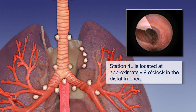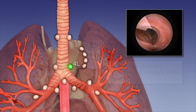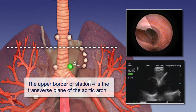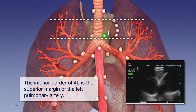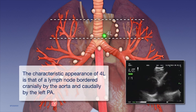Station 4L is located at approximately 9 o'clock in the distal trachea. The upper border of Station 4 is the transverse plane of the aortic arch. The inferior border of 4L is the superior margin of the left pulmonary artery. The characteristic appearance of 4L is that of a lymph node bordered cranially by the aorta and caudally by the left PA.